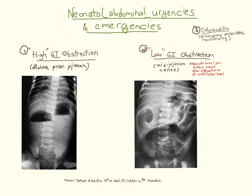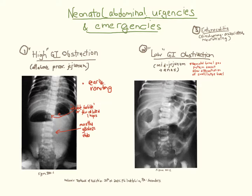Neonates with abdominal surgical conditions may present in three ways. Focusing on bowel obstructions: high GI obstructions are suspected when the stomach or a few bowel loops are distended on the x-ray. These patients often present within 24 hours with vomiting that is often bilious, and usually have a non-distended abdomen.